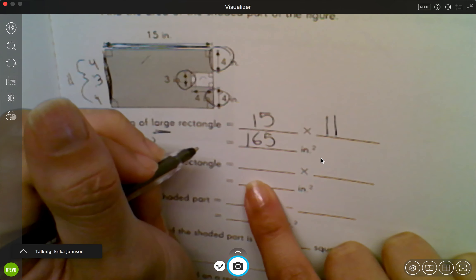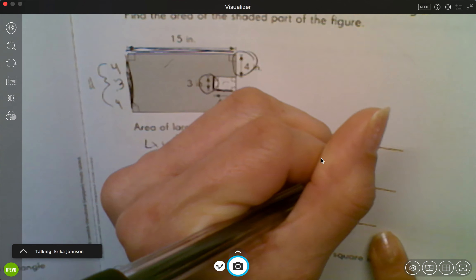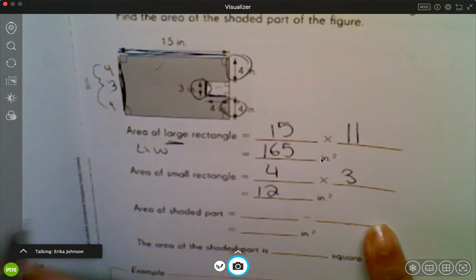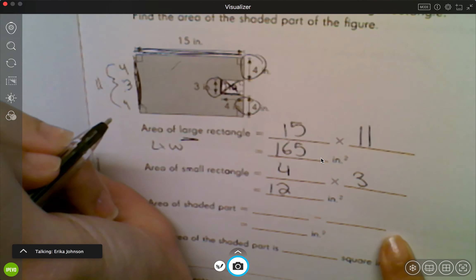Now I'm gonna do the area of the small rectangle, this little thing. I see that it is 4 inches long and I see that's 3 inches wide, and I know 4 times 3 is 12. So the area of that is 12 inches squared.